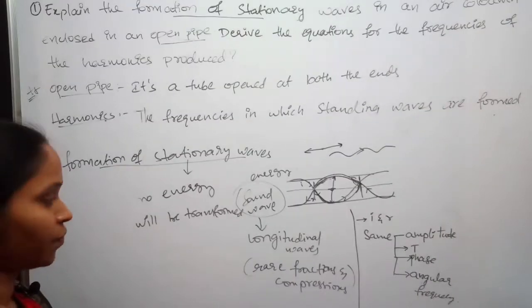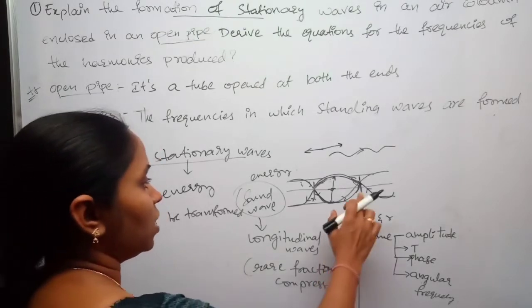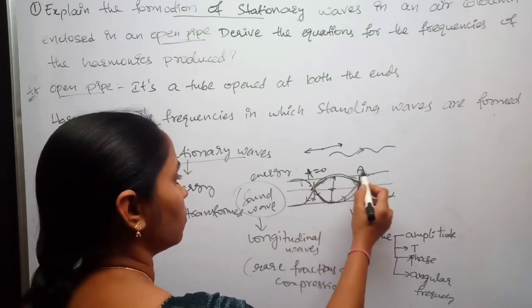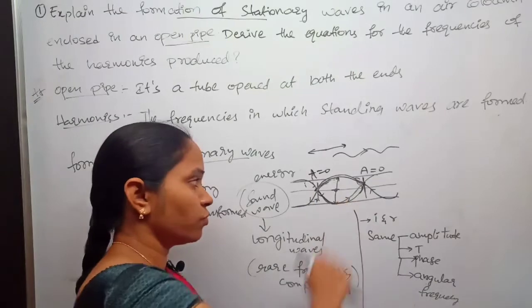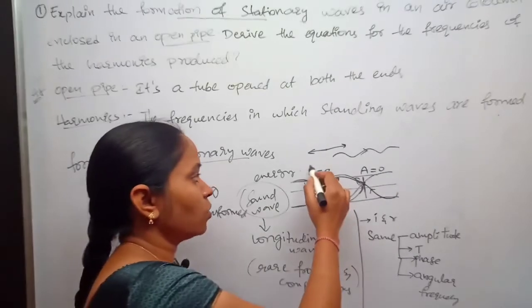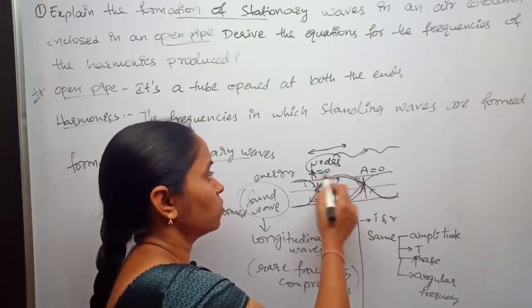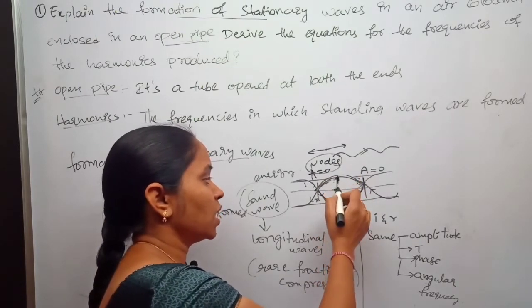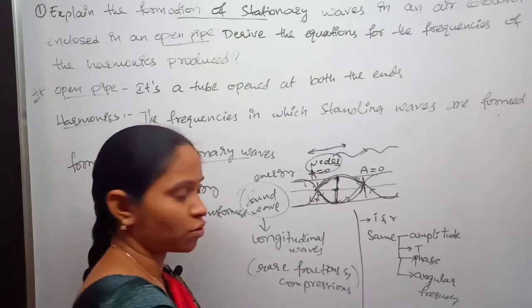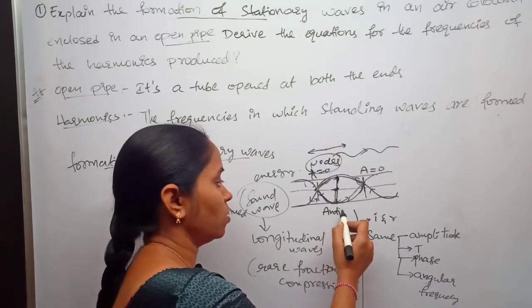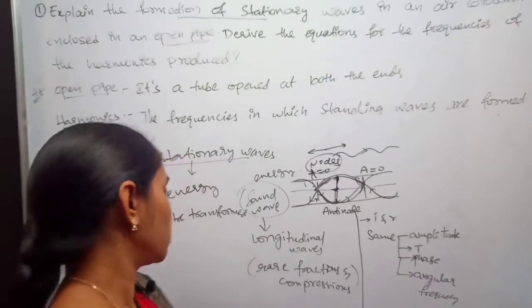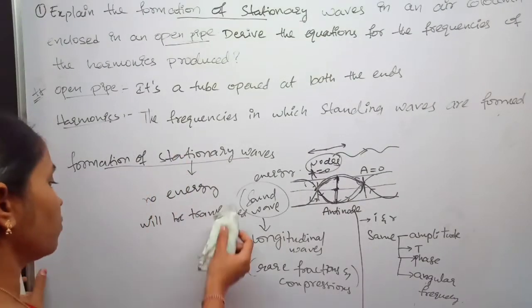The points at which the amplitude is equal to zero are known as nodes. The points at which the particles have maximum amplitude are known as antinodes. This is how a stationary wave or standing wave is formed.